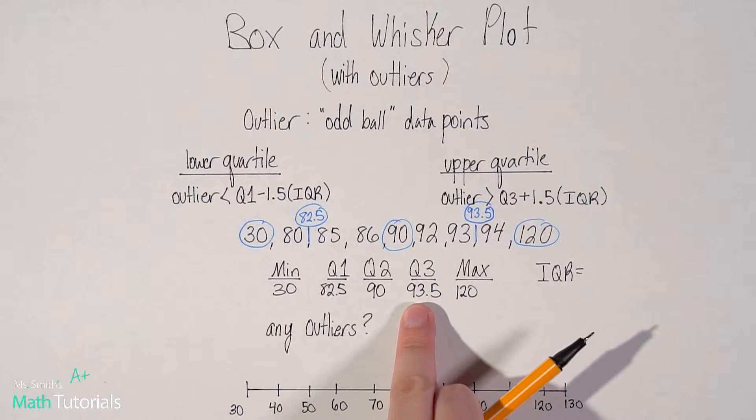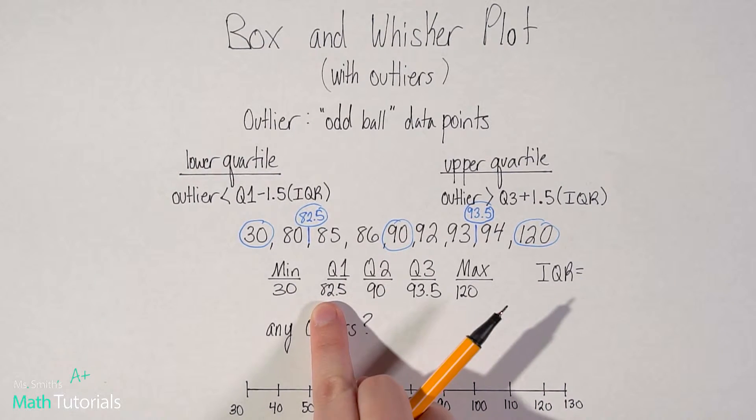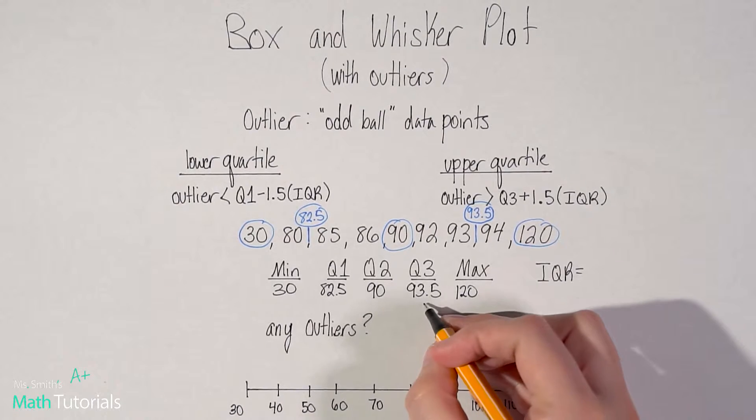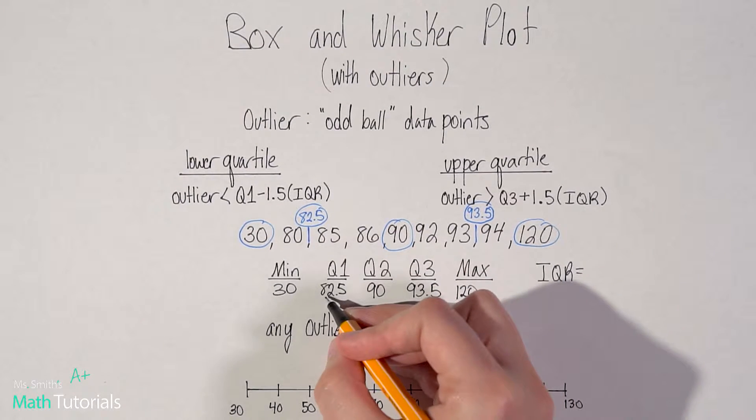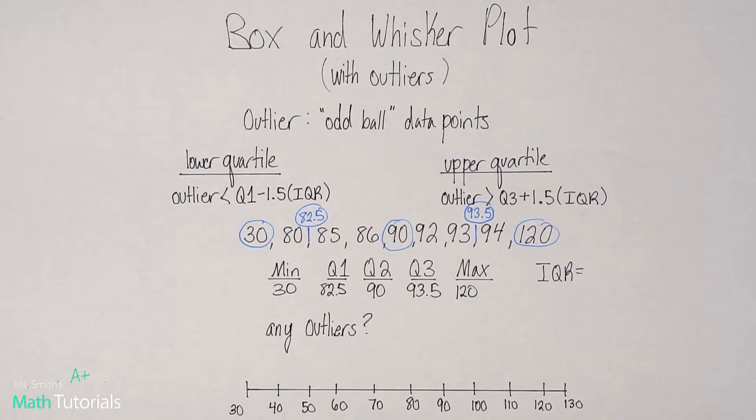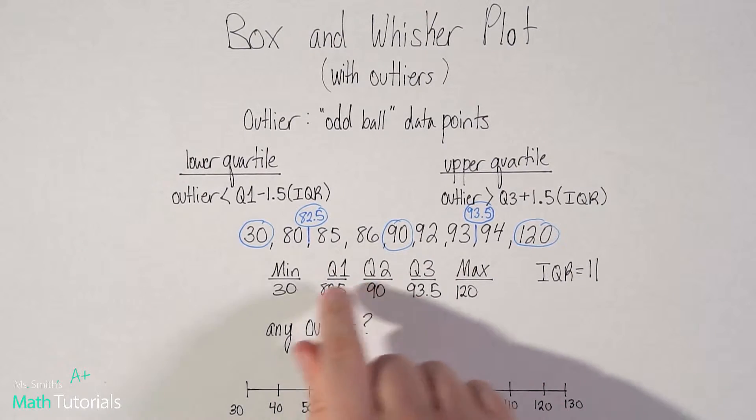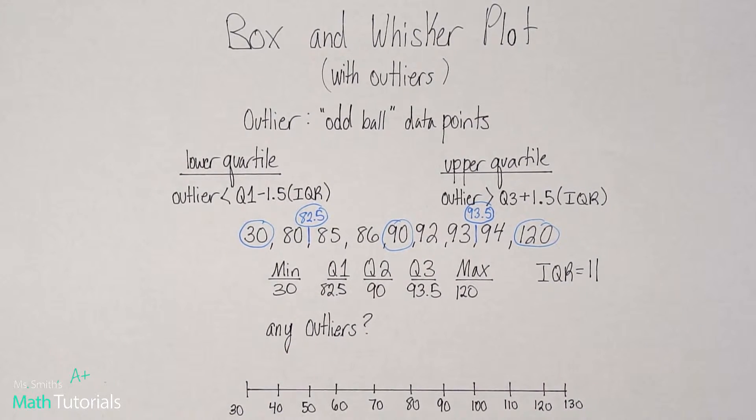Now, I also need to know what my IQR is. And remember, IQR is your Q3 minus your Q1. So that would be 93.5 minus 82.5. So doing that on the calculator. So my IQR in this case is 11. That's the difference between my Q3 and my Q1 value.